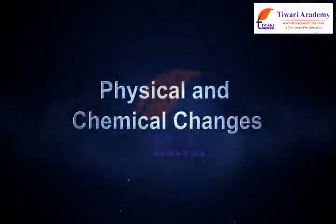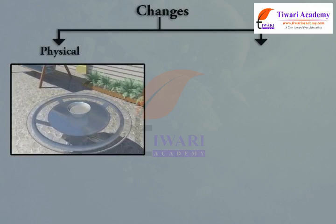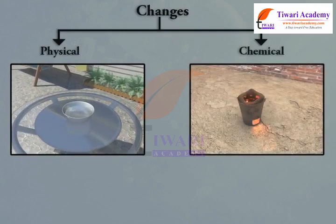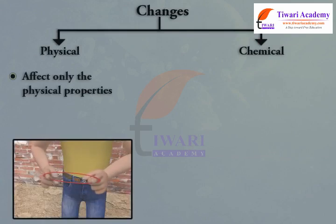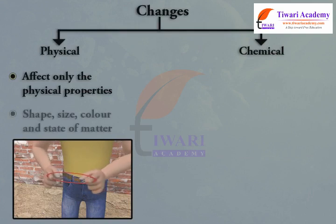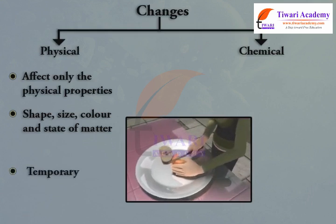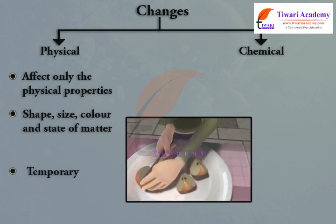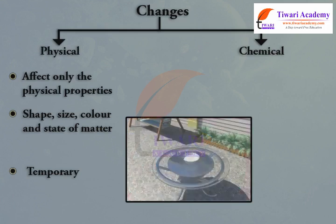All changes that you see can be broadly divided into physical and chemical changes. Some changes affect only the physical properties of the substance undergoing change. Physical properties include shape, size, color, and state of matter. A physical change is temporary — no new substance is formed when a physical change takes place. Forms of energy such as heat, light, and electricity are neither emitted nor absorbed in a physical change.